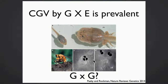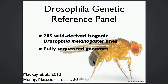What we've done in the Siegel Lab is develop a systematic way to study cryptic genetic variation using a standardized panel of Drosophila flies. The panel we're using is the Drosophila Genetic Reference Panel, or DGRP for short. These are publicly available and consist of over 200 wild-derived isogenic Drosophila melanogaster lines. One great thing about this resource is that all lines have been fully sequenced, so we know the variants associated with each line.